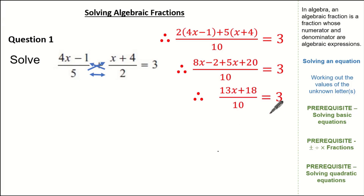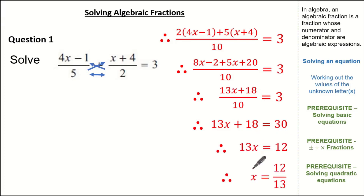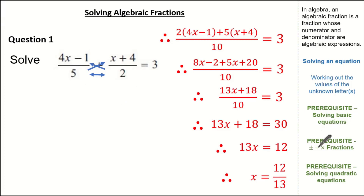Now let's solve using our knowledge on solving basic equations. Multiplying both sides by 10 gives us 13x plus 18 equals 30. Subtracting 18 gives us 13x equals 12. So therefore our final answer is x equals 12 over 13. This simple equation is solved by using our knowledge on addition and subtraction of fractions.